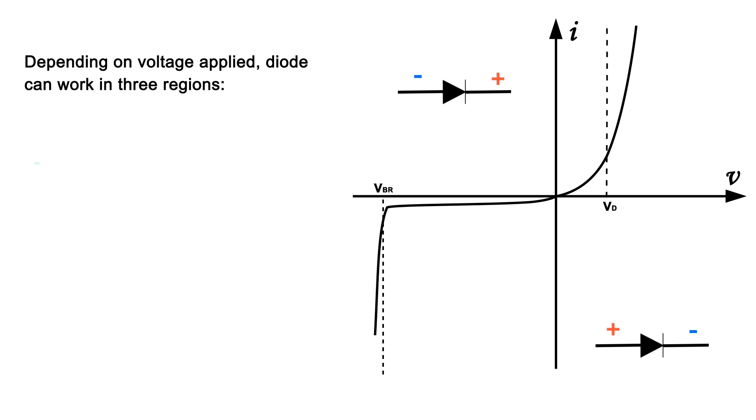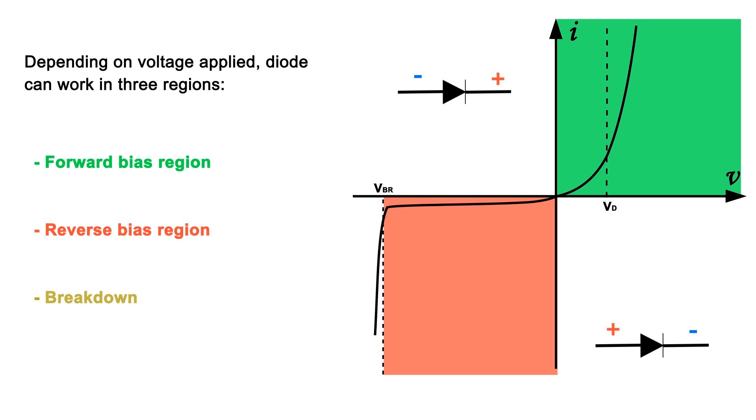Depending on voltage applied, a diode can work in three regions: forward bias region, reverse bias region, and breakdown region.